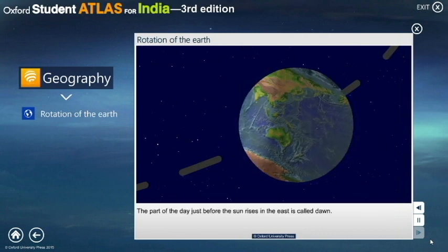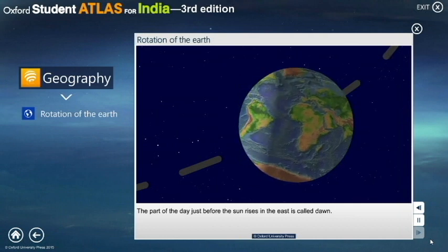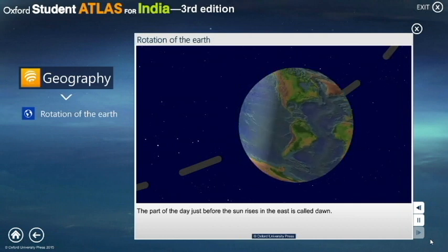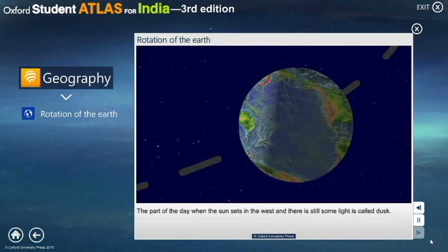The countries in the eastern part of the globe experience sunrise earlier than the countries in the west. Can you name the country known as the land of the rising sun? The land of the rising sun is Japan.